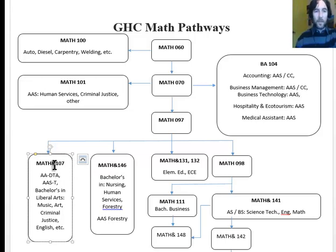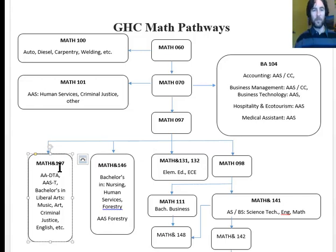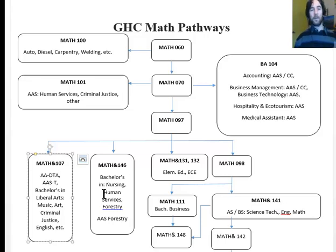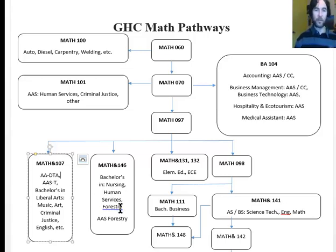The classes with the ampersand will count towards a Bachelor's Degree for some majors. Math 146 Statistics counts towards Nursing, Associate of Direct Transfer or Bachelor's in Human Services, Forestry, and also the Associate of Applied Science in Forestry.